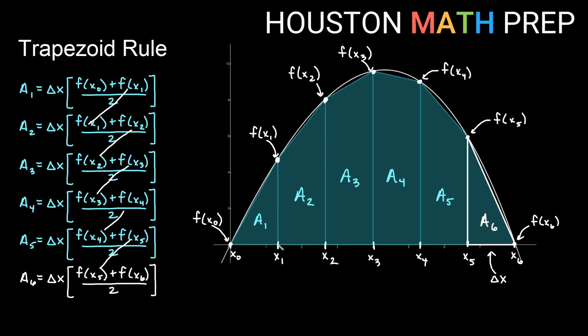f of x1 is the y value at the right endpoint of the first trapezoid, but it is also the left endpoint height of the second trapezoid. A similar thing happens for f of x2. It occurs twice because it is the right endpoint of our second trapezoid, but it is also the height of the left endpoint of our third trapezoid. So everything between the first y value and the last y value is actually going to appear twice in our formula.